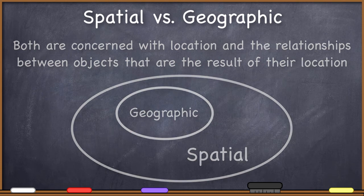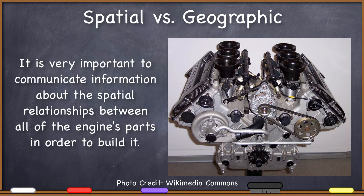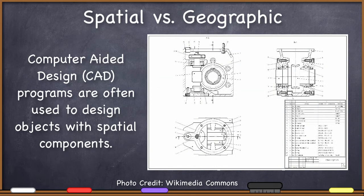Lots of people are concerned with spatial information. Take engineers, for example. When they build something like an engine, they must be concerned with the spatial relationships between all of the parts. Communicating those spatial relationships is an important component of communicating how to build the engine — it's not enough to just have all of the parts; they have to go together in a certain way. Perhaps you've heard of computer-aided design programs, used by engineers to help them design objects. This is also the case with architects designing a house, office building, or church. Even interior designers are concerned with the spatial arrangement of objects in rooms. If you're buying furniture online, you can sometimes use an app to arrange pictures of furniture to see how they'll fit in the room before you buy.